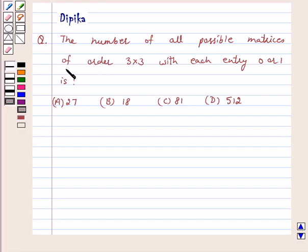The number of all possible matrices of order 3 by 3 with each entry 0 or 1 is: A) 27, B) 18, C) 81, D) 512.